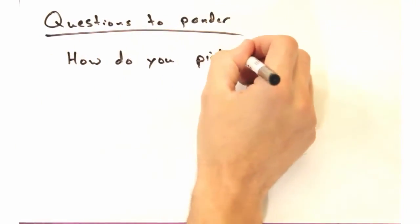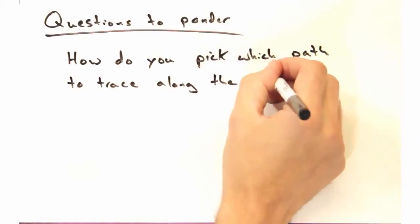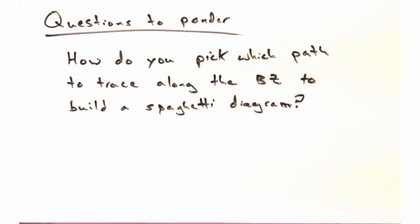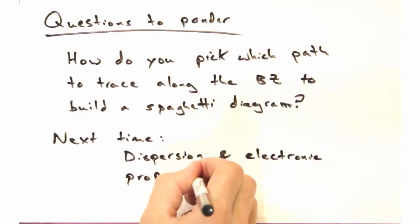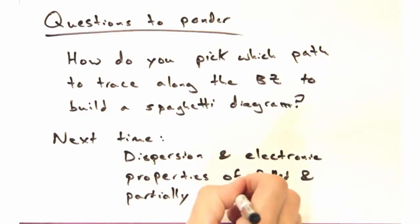And finally, how do you decide what path to trace along the Brillouin zone to build a spaghetti diagram? So thanks for watching today's Solid State Physics in a Nutshell. Next time, we'll look back at dispersion relationships and investigate the electrical properties for filled and partially filled bands. See you then.